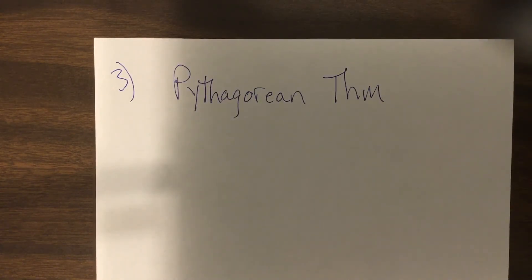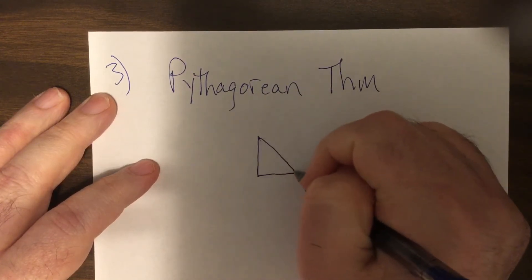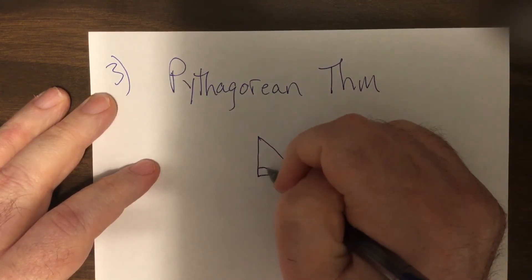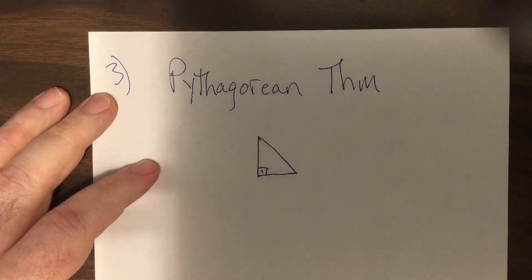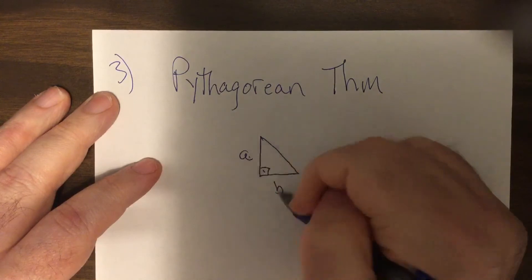The Pythagorean theorem says this: When you have a right triangle, a triangle that has one right angle in it, you have three sides.